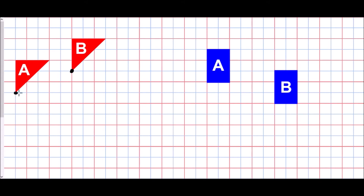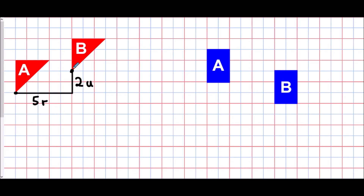I'm going to draw an L-shape so that I can see exactly how I have moved from the first shape to the second. The first thing I did was to move across. Just like with coordinates and reading sets of axes, we always use across first and then up and down. In this case I have moved one, two, three, four, five spaces to the right — five units right. Going up, it is two, so I've gone two up.